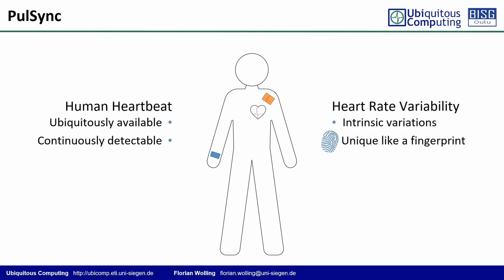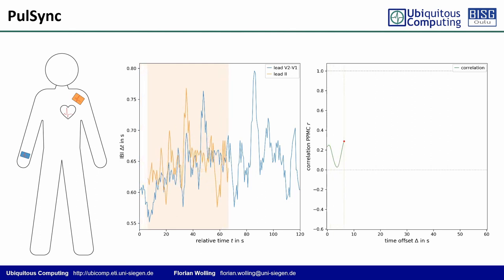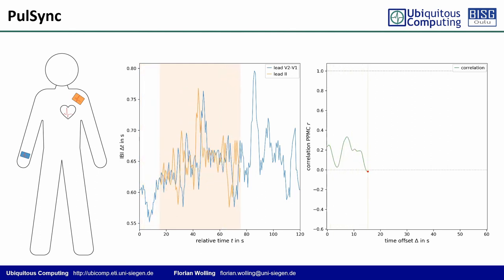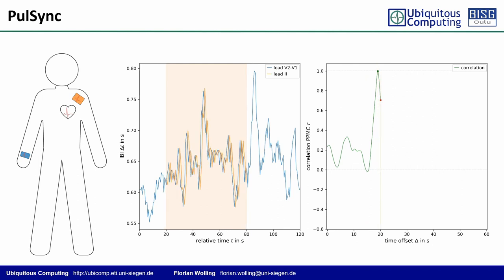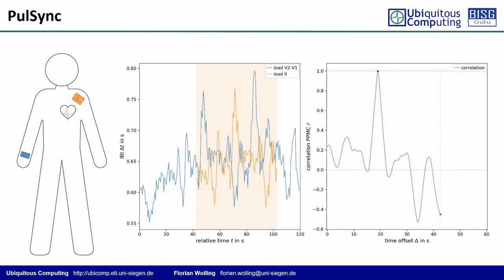The heart rate's intrinsic variations are unique like a temporal fingerprint and enable the distinct offline alignment of recordings. The processing pipeline applies a normalized cross-correlation on heart rate variability interval functions. In our study, we have achieved an accuracy of about 3 ms.